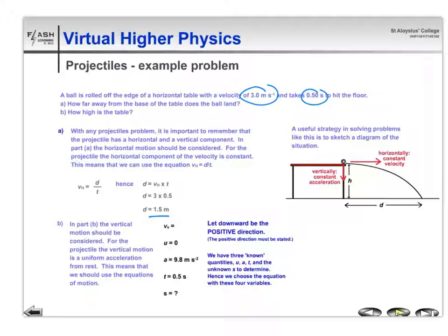Because it's fired horizontally, we can see under the vertical heading that u is 0. It's very important that that 3 meters per second, that you're clear in your head, is horizontal. It's not vertical. The other thing we know is that the acceleration due to gravity is 9.8.